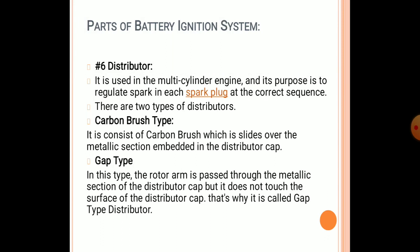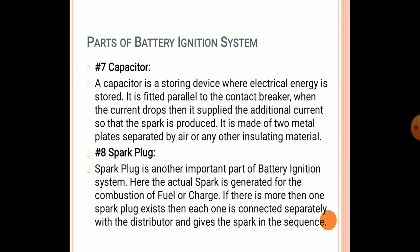The distributor in the battery ignition system serves multi-cylinder engines, and its purpose is to regulate the spark of the spark plug in the correct sequence as required. There are two types: brush type, which consists of carbon brushes that slide over the metallic section of the distributor cap, and gap type, where the arm passes through but does not touch the surface of the distributor cap.